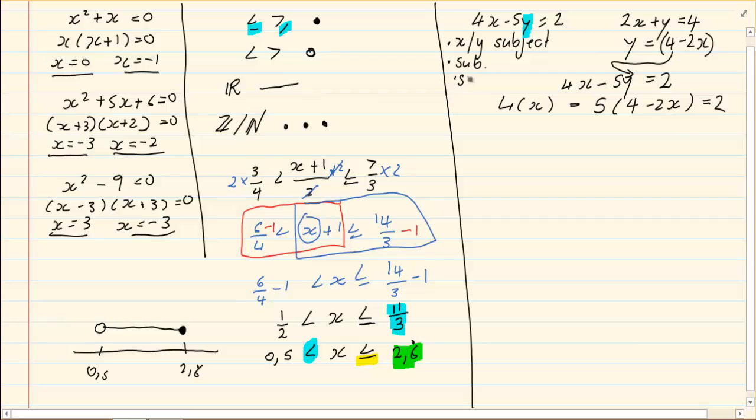Now we are going to simplify and we are going to solve. So we have 4x minus 20 plus 10x is equal to 2. 10x plus 4x is 14x is equal to, I am going to take the 20 over, it becomes plus 2, so I am left with 22. But to get my x alone, I am going to divide by 14. So I got x is equal to 11 over 7.